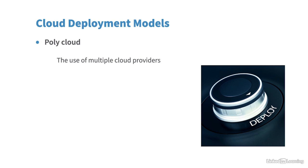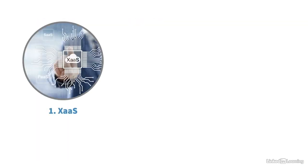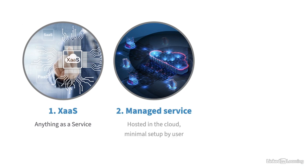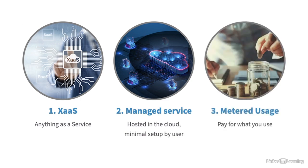Cloud service models fall under the umbrella of XaaS — anything as a service — referring to managed services that run in the cloud on cloud provider hardware. Depending on what you're using determines how much you have to configure of the underlying servers or software. A managed service means it's hosted in the cloud with minimal setup by the user, and metered usage means you pay for what you use — for example, being charged by the hour or even by the minute for running virtual machines in the cloud.